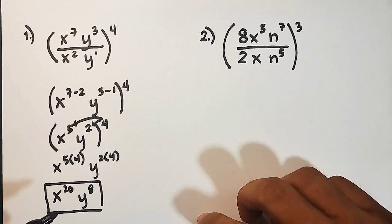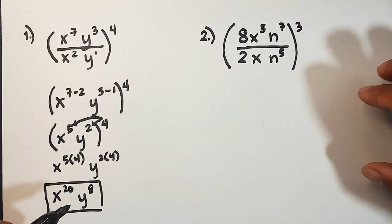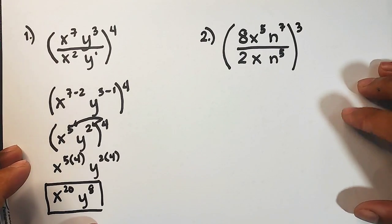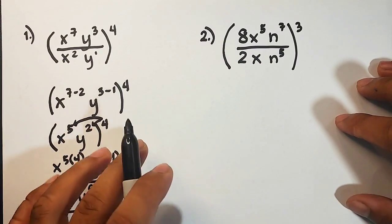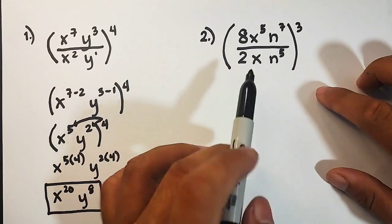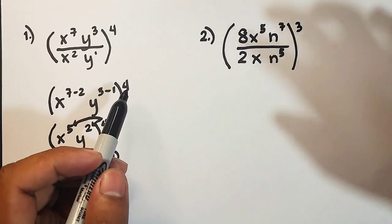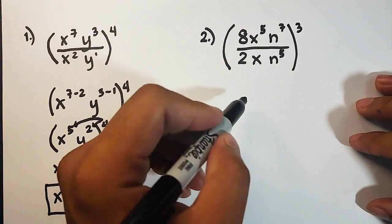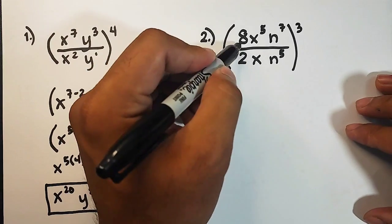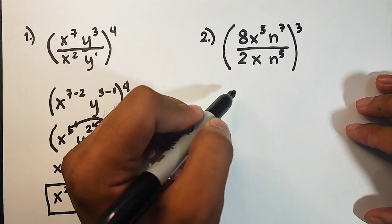So let's continue with item number 2. For number 2, the difference in number 2 and number 1 is that it has the coefficient of 8 and 2. But don't worry, this one is not that difficult. First, we will simplify the numbers. 8 over 2, or 8 divided by 2 is 4.